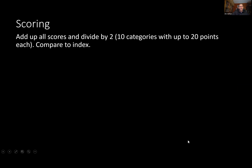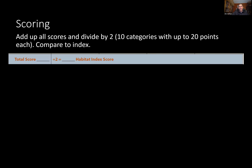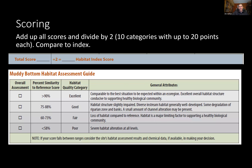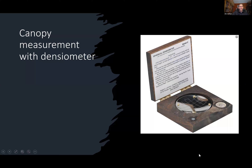For muddy bottom scoring, as with rocky bottom you have 10 categories at up to 20 points each. Add up all scores, divide by two to get your habitat index score, and compare that to your reference scale.